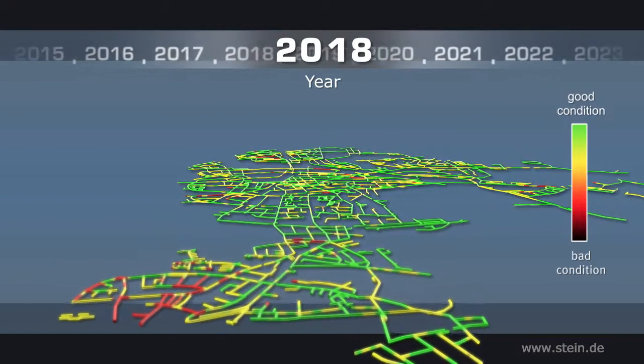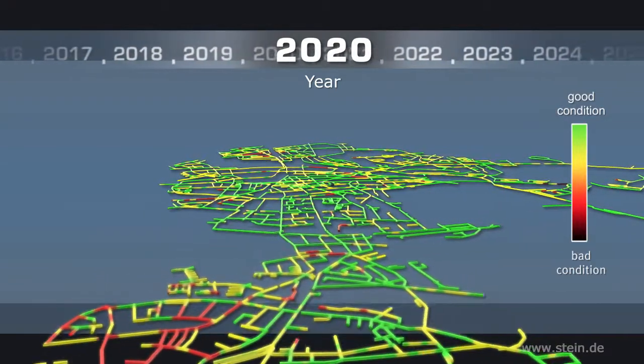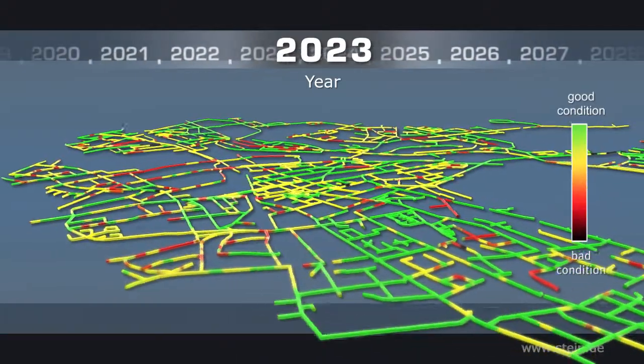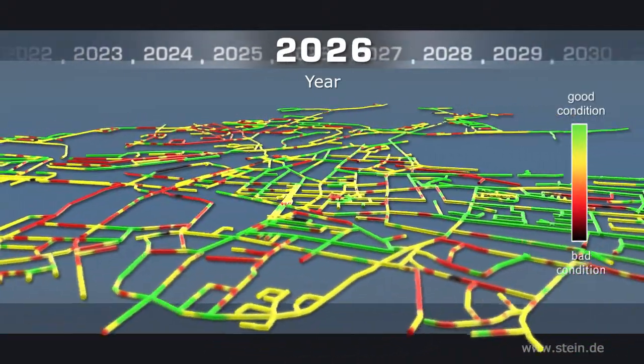Based on section assessment and age deterioration, behavior of the network can be determined. As sections deteriorate differently, the network is clustered according to age-relevant attributes.